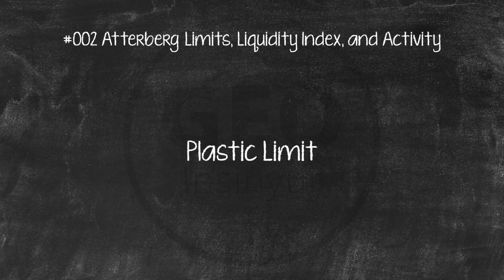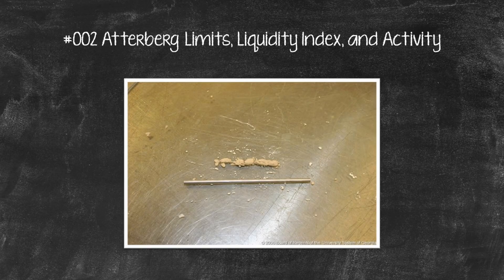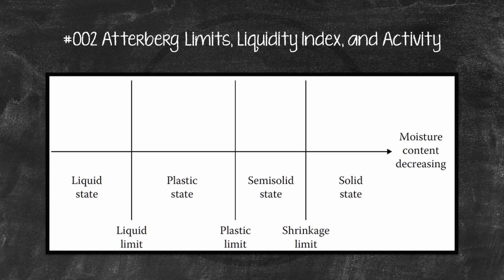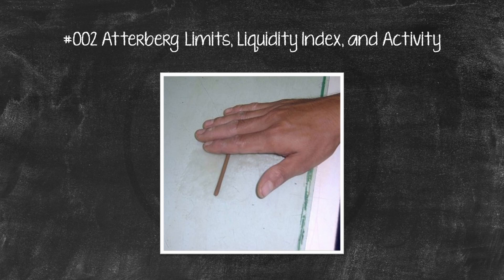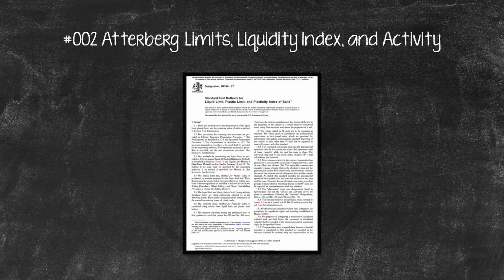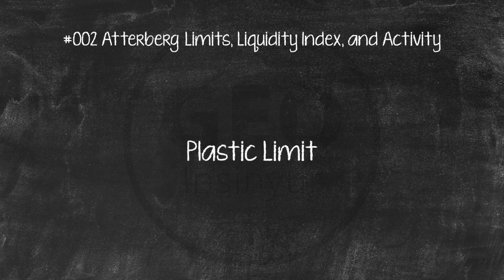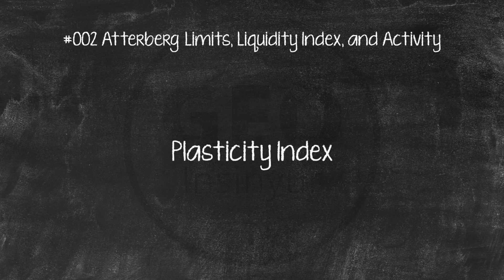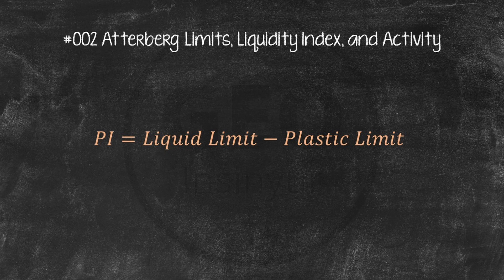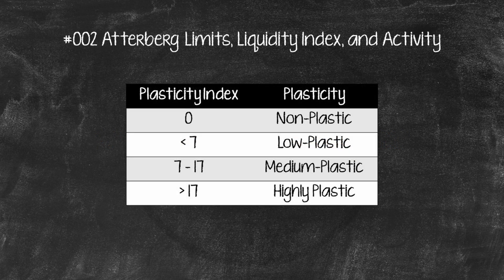The plastic limit is defined as the moisture content, in percent, at which the soil crumbles when rolled into threads of 3.2 millimeters diameter. It is the lower limit of the plastic stage of soil. The plastic limit test is performed by repeated rolling of an ellipsoidal-size soil mass by hand on a ground glass plate, per ASTM test designation D4318. The difference between the liquid limit (LL) and the plastic limit (PL) is defined as the Plasticity Index (PI). PI indicates the range of moistures over which a soil remains plastic and the amount of clay particles in the sample. Higher clay content means higher PI and greater shrink-swell potential and compressibility.